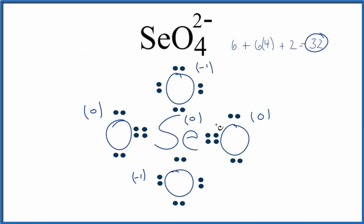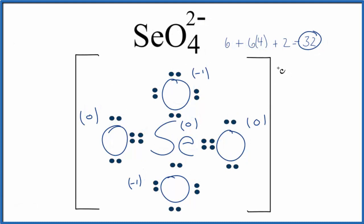So this is the best Lewis structure for SeO4 2-. We should put brackets around it, though, to show that it's an ion. And then we could write 2- out here to show the ionic charge.